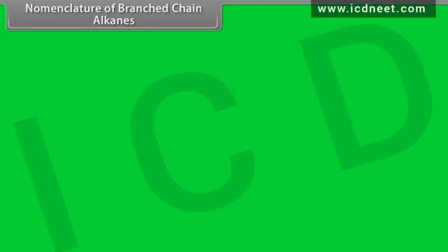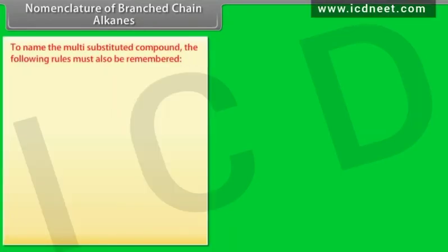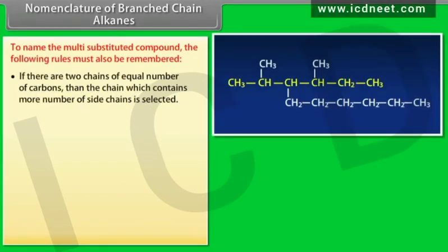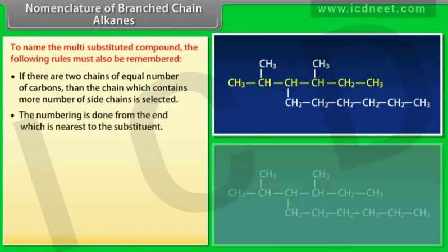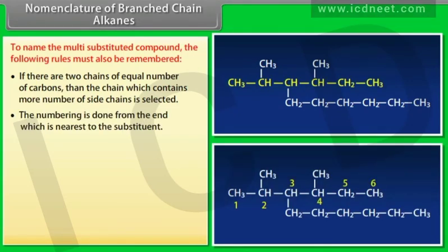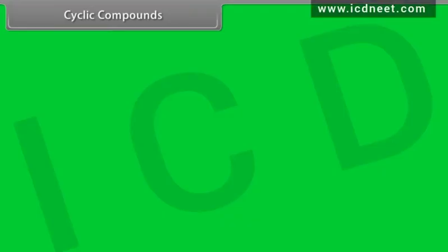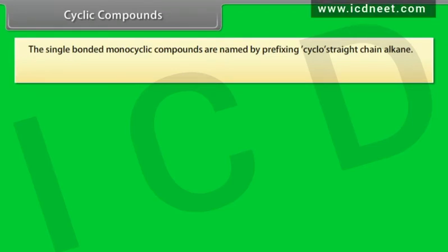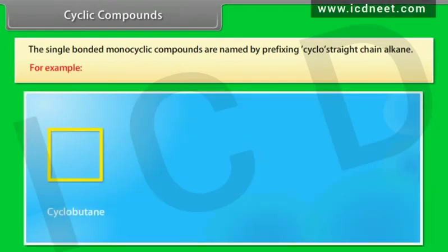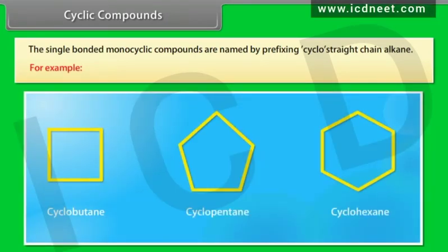For multi-substituted compounds: if there are two chains of equal carbon number, the chain with more side chains is selected. Numbering is done from the end nearest to the substituent. For example, the IUPAC name of the given compound is 4-(2,2-dimethylpropyl)octane. Single-bonded monocyclic compounds are named by prefixing 'cyclo' to the parent chain alkane — for example, cyclobutane, cyclopentane, cyclohexane.